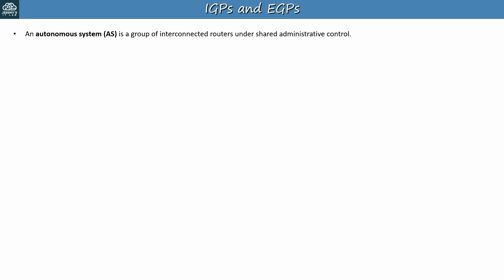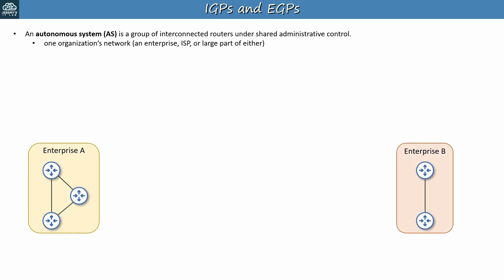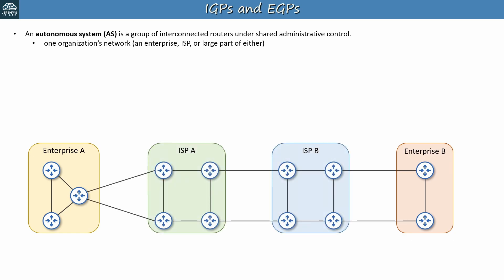Let's compare IGPs and EGPs. First, a definition: an autonomous system, or AS, is a group of interconnected routers under shared administrative control — basically one organization's network, whether that's an enterprise, an ISP, or a large part of either. For example, here we have two enterprise networks, each its own AS, connected by two ISPs, each also an AS. So we have four ASs in total: Enterprise A, ISP A, ISP B, and Enterprise B. Interior gateway protocols, or IGPs, are designed to enable routing within an AS.